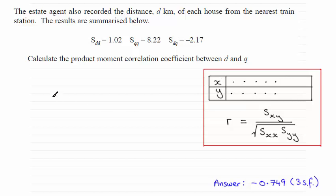So all we need to do is replace the X with D's and the Y's with Q's. So we've got our product moment correlation coefficient R. Instead of it being SXY, it is now SDQ. And that is divided by the root of, instead of SXX, it's going to be SDD, and instead of SYY, it will be SQQ.